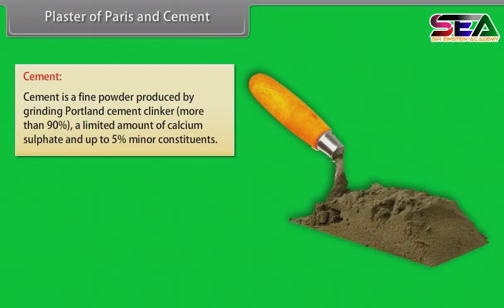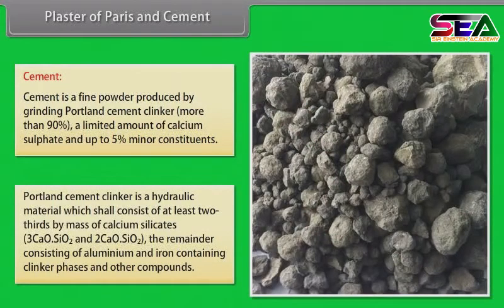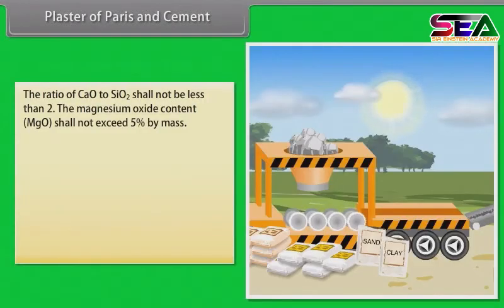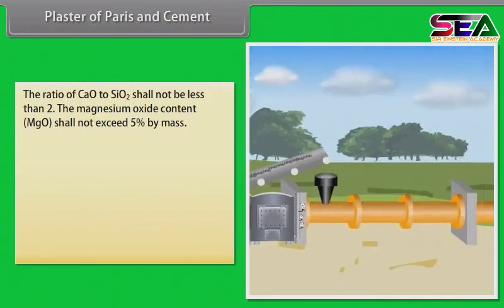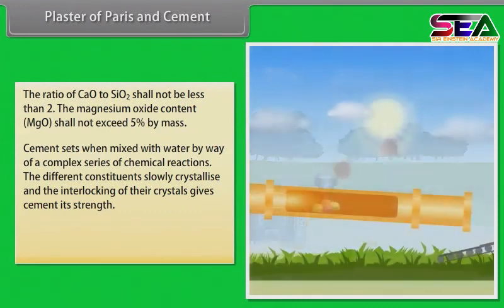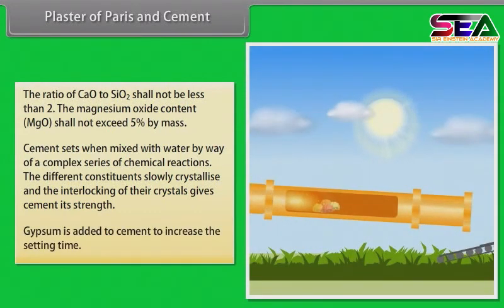Cement is a fine powder produced by grinding Portland cement clinker (more than 90%), a limited amount of calcium sulphate, and up to 5% minor constituents. Portland cement clinker is a hydraulic material consisting of at least two-thirds by mass of calcium silicates. The ratio of CaO to SiO₂ shall not be less than 2, and the magnesium oxide content shall not exceed 5% by mass. Cement sets when mixed with water through a complex series of chemical reactions. Gypsum is added to cement to increase the setting time.